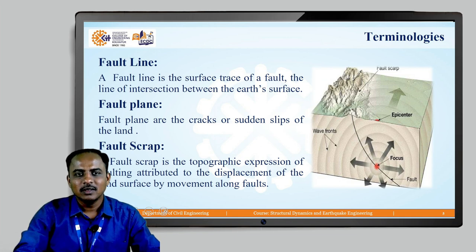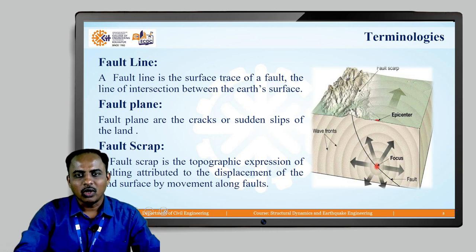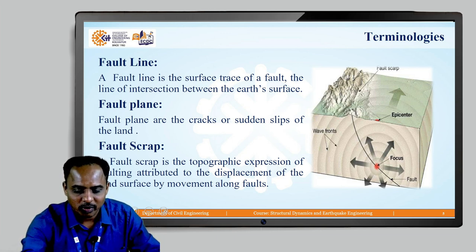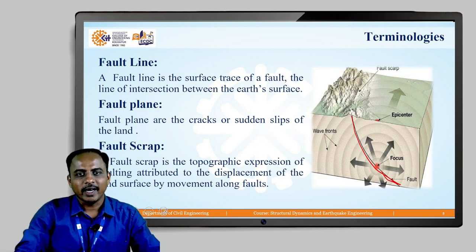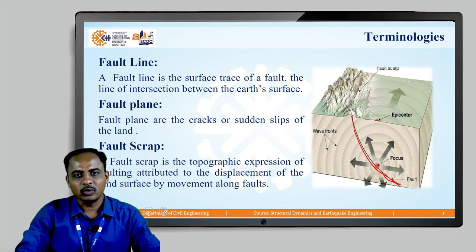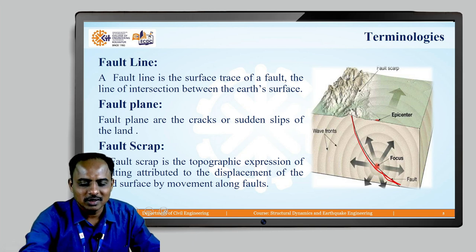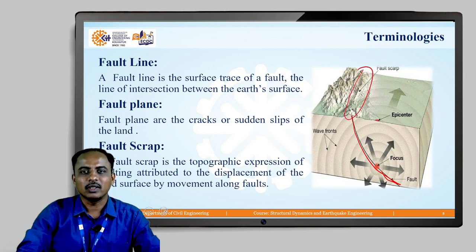Then we have a fault line. Fault line is the surface of a fault — the line of intersection between the earth's surface. Fault plane is the plane along which the cracks are generated. Fault scarp is a topographic expression of faulting attributed to displacement of land surface by movement along faults. You can see this region — this is called the fault scarp.